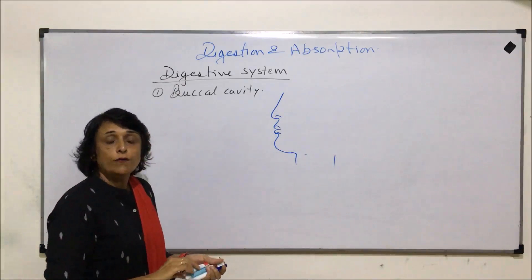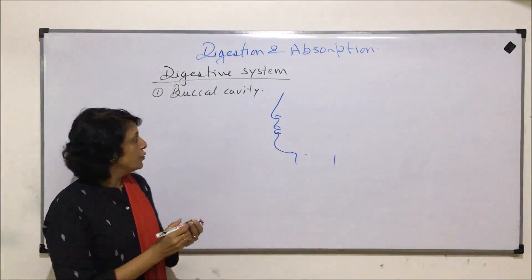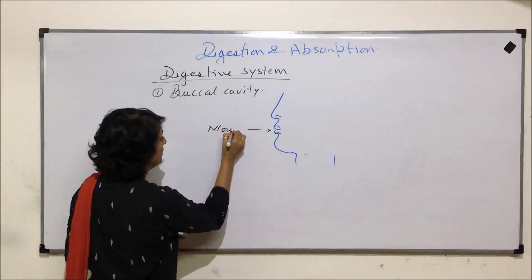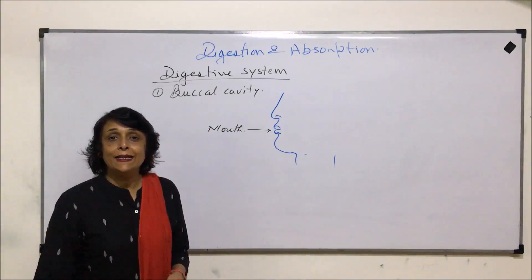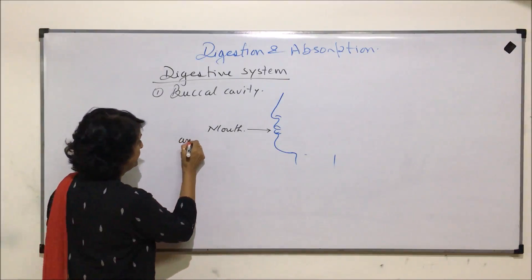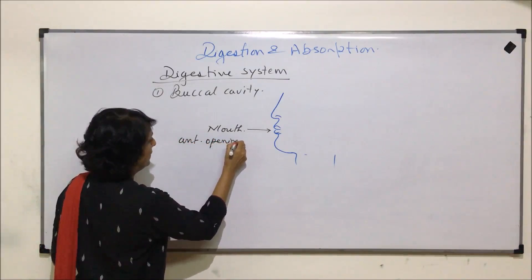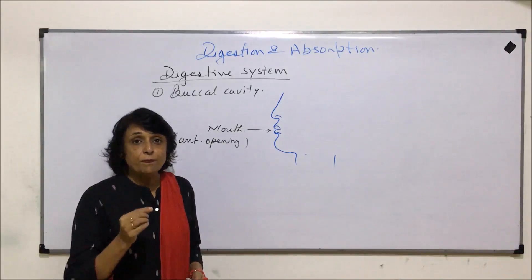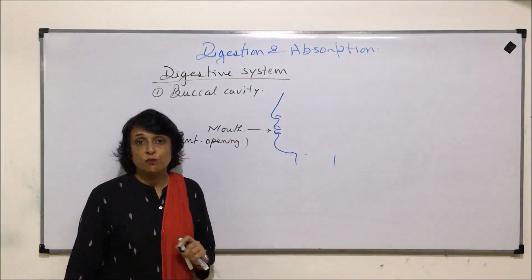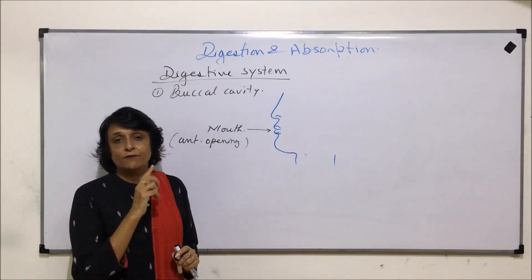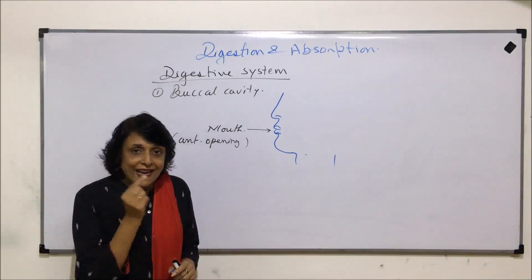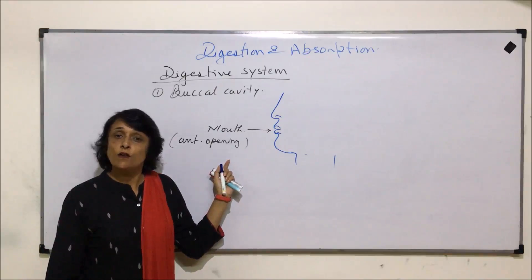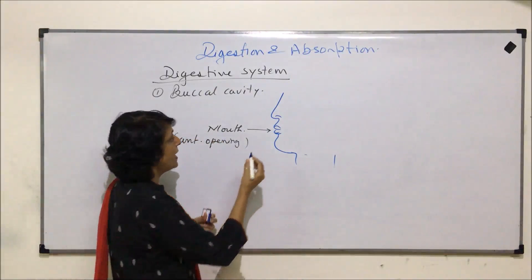When we talk of the entry of food into our mouth or into our alimentary canal, the opening is called the mouth. The mouth can be termed as the anterior opening of the alimentary canal. It leads into a small space between the lips and the teeth, which is known as the vestibule. The mouth is an opening guarded by two lips in human beings.